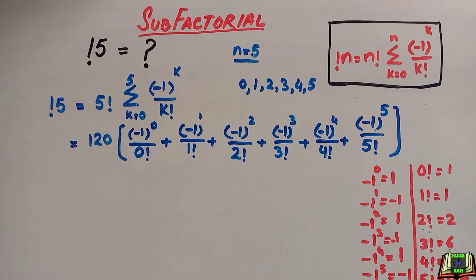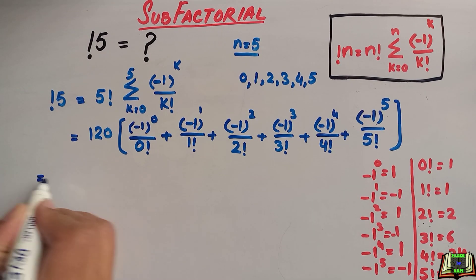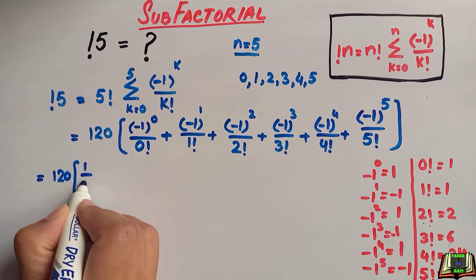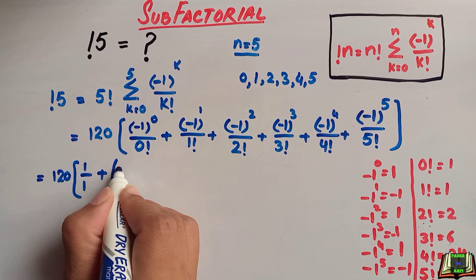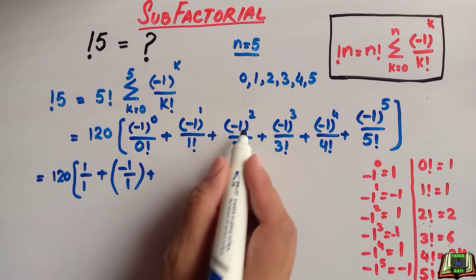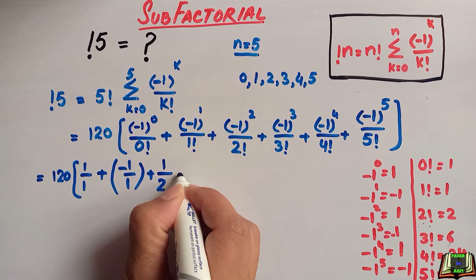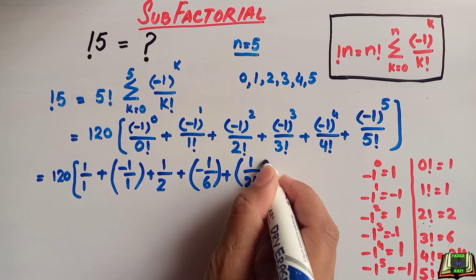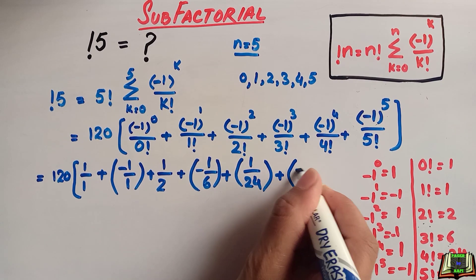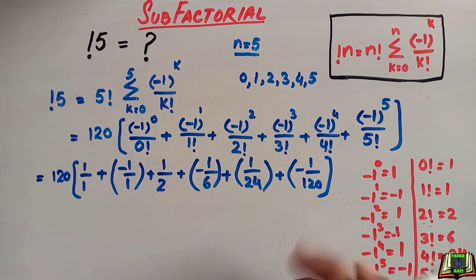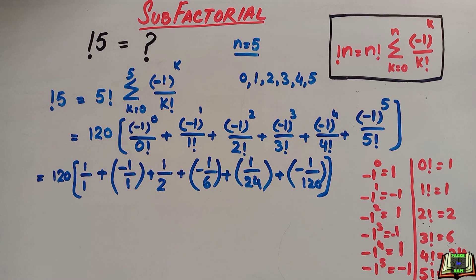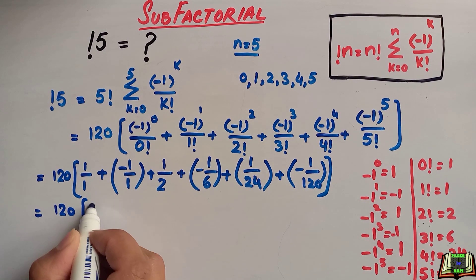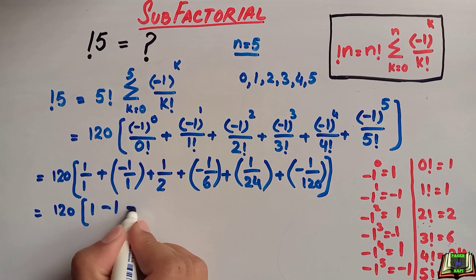Now putting these values in: 120 times (1 over 1 plus minus 1 over 1 plus 1 over 2 plus minus 1 over 6 plus 1 over 24 plus minus 1 over 120). In the next step we simplify: 1 over 1 is 1, and the minus 1 over 1 cancels with 1, so we are left with 1 over 2 minus 1 over 6 plus 1 over 24 minus 1 over 120.